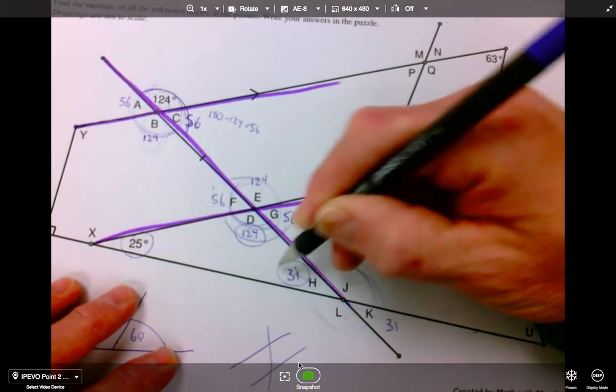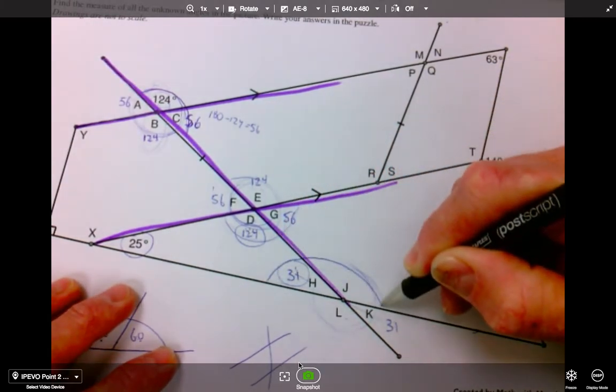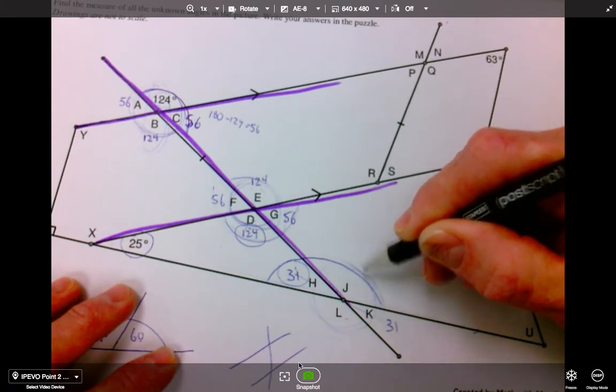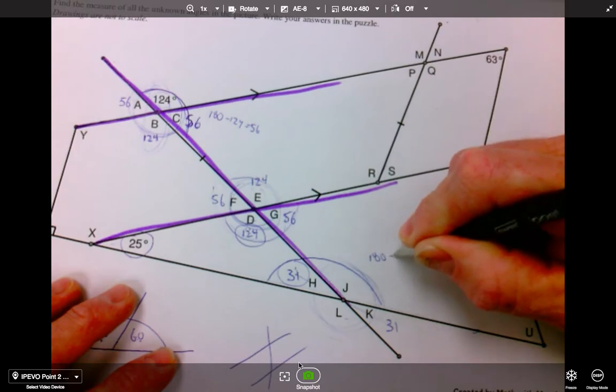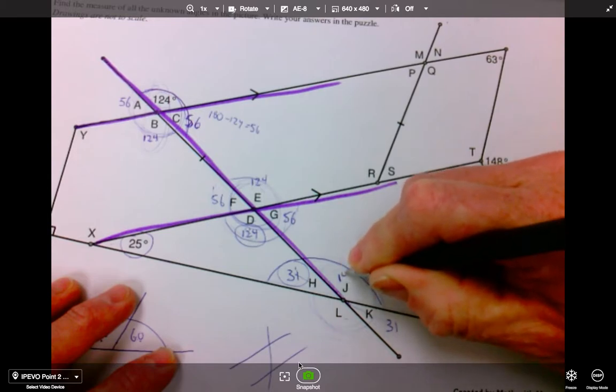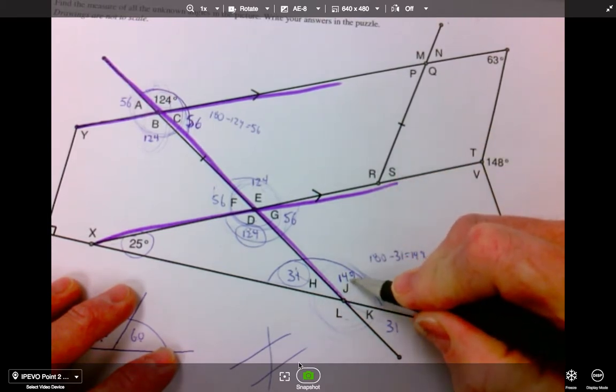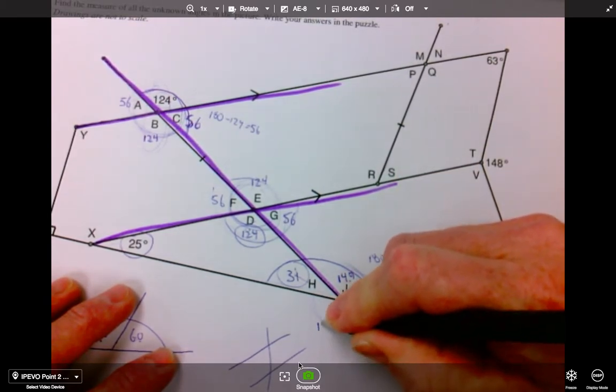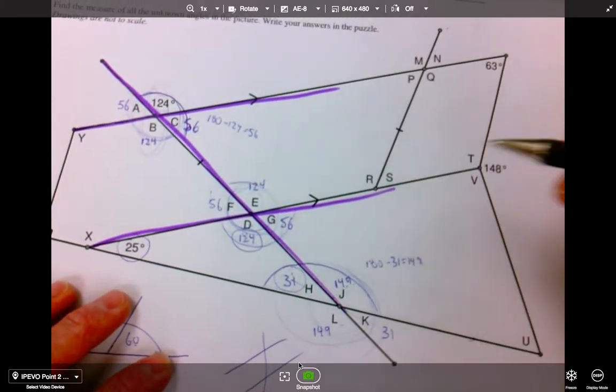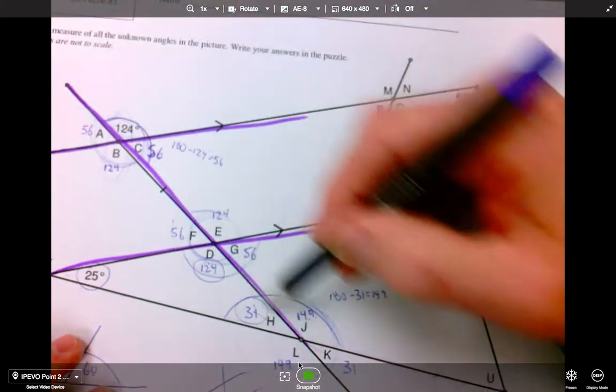If this is 31, the supplementary angle, the other one here, well, 180 minus 31 will give me 149. So this becomes 149. And then, of course, I know this side. This would also be 149. Beautiful. All right. So now we've got this whole section set up.